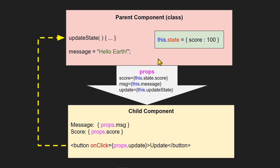When you pass data from a parent component to a child component, you pass it through a property called props. This is an invisible property — you don't see it, you don't code it directly. You just add these properties as attributes to a child component tag, and they will be added to the props object automatically.